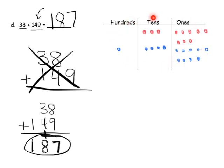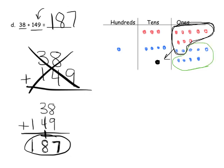Let's verify with our place value chart and number disks. We have 8 plus 9 equals 17, so we can bundle 10 ones — that's 8 plus these 2 — to equal one 10. We have 7 left over in the ones column. Then we have 3 tens, 4 tens, plus a new one, so 3 plus 4 plus 1 gives us 8 in the tens column. We have just 1 in the hundreds column, so our answer is 187.